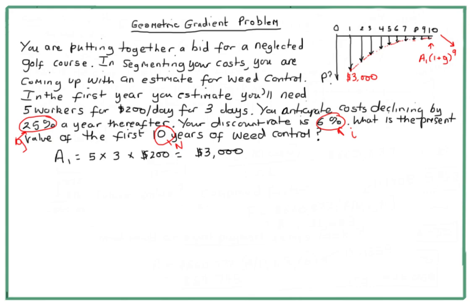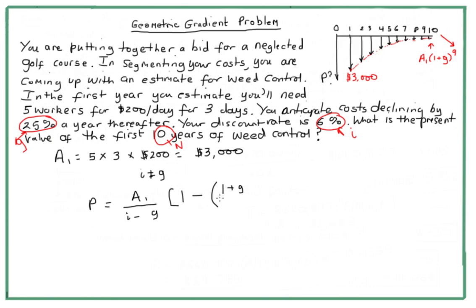We have the situation where i is not equal to g. I did do a simpler case where i equals g, and that's much simpler. Since they're not equal here, we need the full formula: P equals A1 divided by (i minus g), multiplied by 1 minus [(1 + g) over (1 + i)] to the power of n.